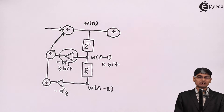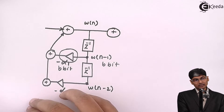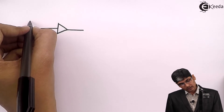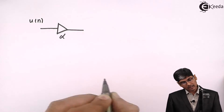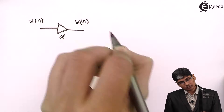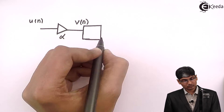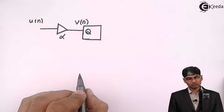We will analyze what type of error occurs when rounding is done in a digital filter. Let us consider a very general case — not specifically second-order direct form 2, just a generic case. We assume a practical multiplier with a quantizer at its output. The input to the multiplier is u(n), its coefficient is alpha, and the output after multiplication is v(n). After multiplication, we perform rounding, which we denote as Q.